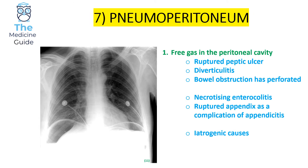This is an example of a pneumoperitoneum. A pneumoperitoneum presents on an erect chest x-ray — not an abdominal x-ray — and represents free gas in the peritoneal cavity.